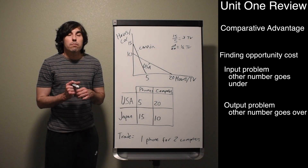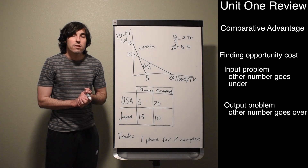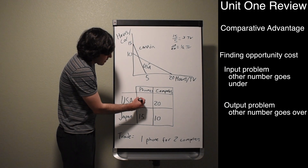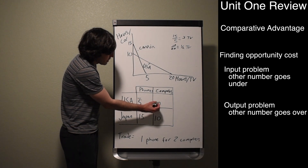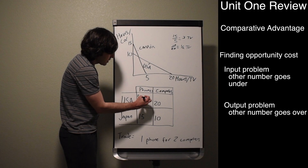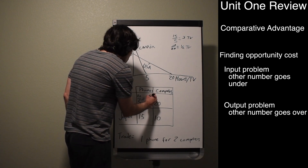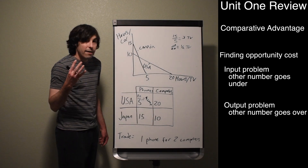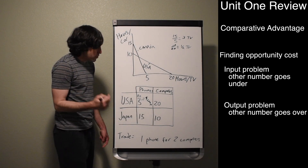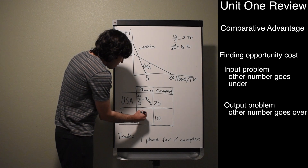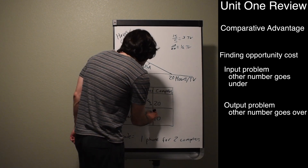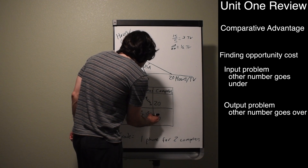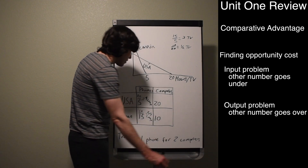To find comparative advantage in an output problem, you take the other number and put it over. To find the opportunity cost of making one phone in the US, take the 20 computers and put it over 5: 20 over 5 equals 4 computers. Every time the US makes one phone, they give up 4 computers. For Japan, it's 10 over 15, which equals two-thirds — every time Japan makes one phone, they give up two-thirds of a computer.